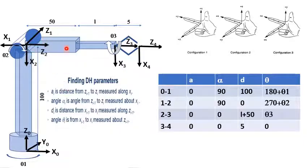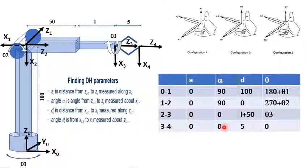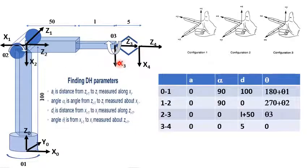Z1 to Z2 is positive 90 degrees pointing downward. Z2 to Z3 are parallel, so the angle of twist alpha is zero. Z3 to Z4 are also parallel, so alpha is zero as well. For d: d1 is 100, d2 is zero, d3 is l plus 50 where l is a variable, and d4 is 5 along Z3.